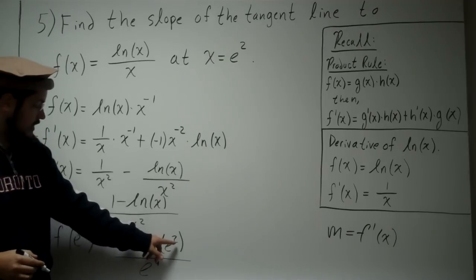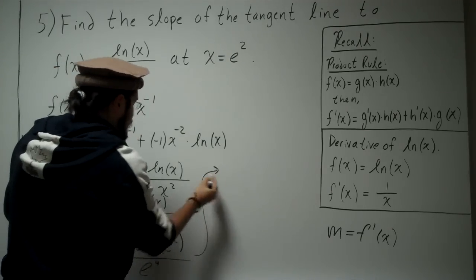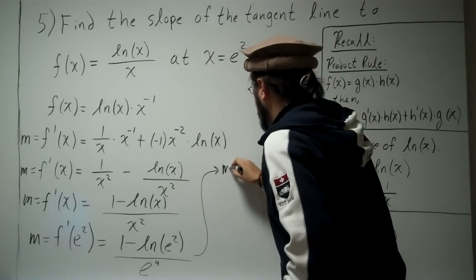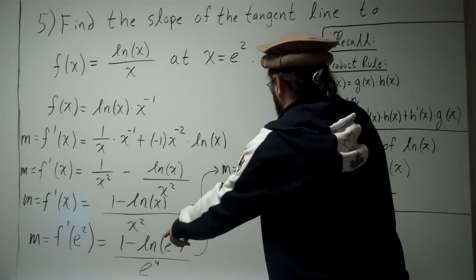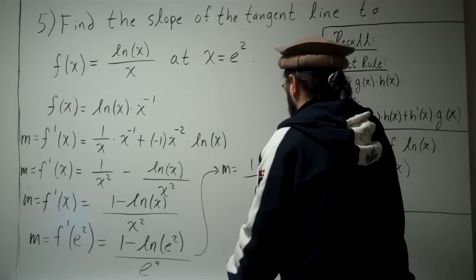But ln of e squared is just two. So we have, let's bring this over here. We have now that m is equal to 1 minus 2, divided by e to the fourth.